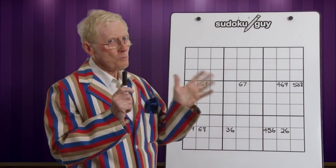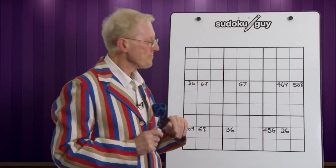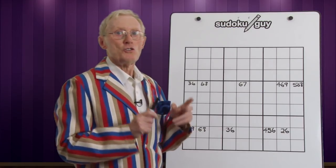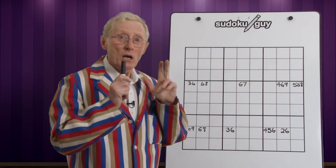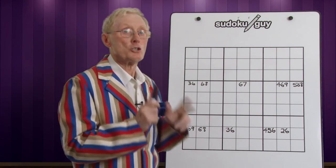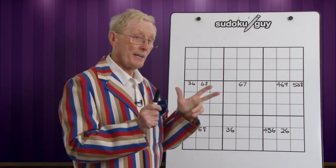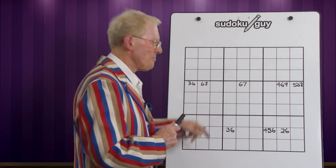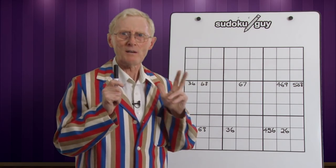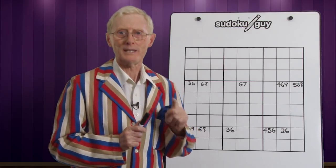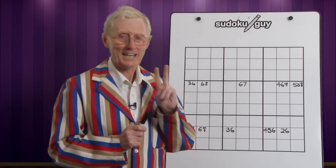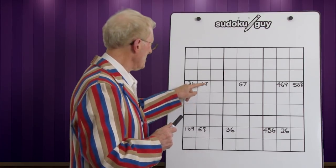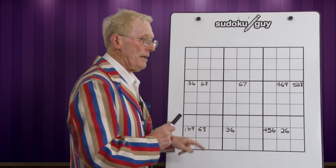There are two forms of X-Wing — I'll show you both of them. In this case we're looking at a column that has one number that only goes in two places. Usually you're just looking for one number that goes only in two places. And if you look at this column, this six occurs there and there, and that is all.